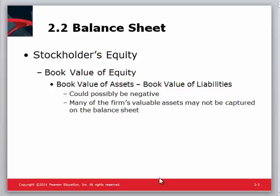We certainly want stockholders' equity to be positive. When this number is negative, it's indicative of a company that essentially is in bankruptcy — it's in severe trouble. One of the challenges of this number is that negative numbers are very bad, but we also have assets that are not even captured on the balance sheet. We're looking at book value, so the real estate value of the company is not incorporated here. The value of patents, trademarks, and copyrights — none of that is incorporated into the book value. So for companies with lots of real estate and intangible assets, their value frequently just doesn't show up in the book value.